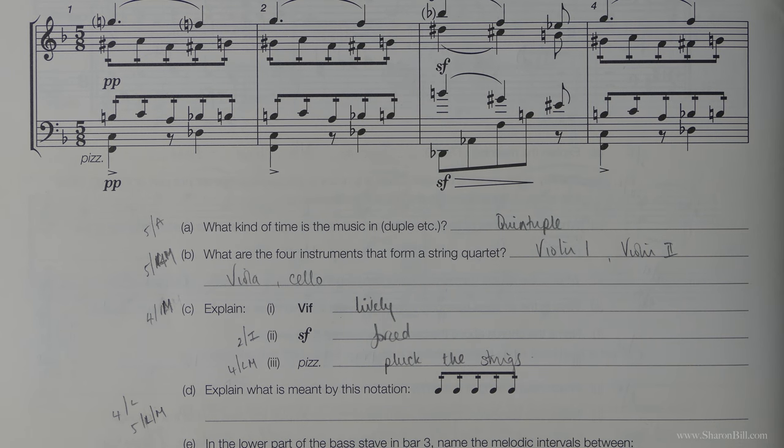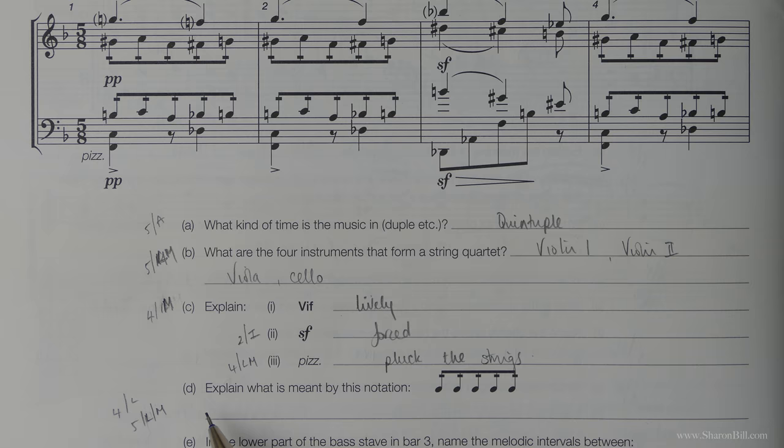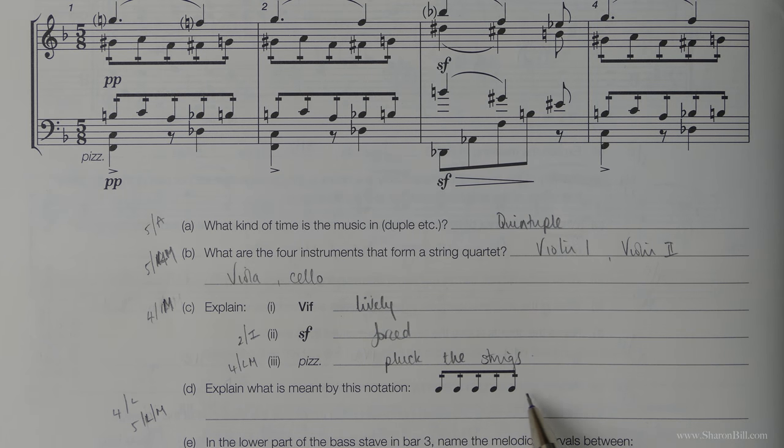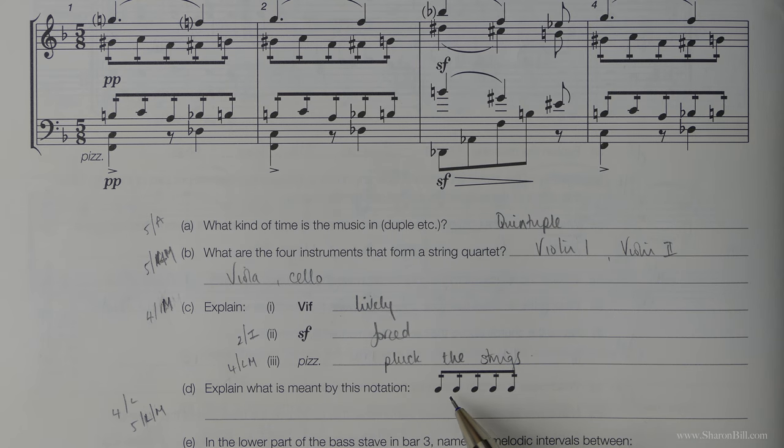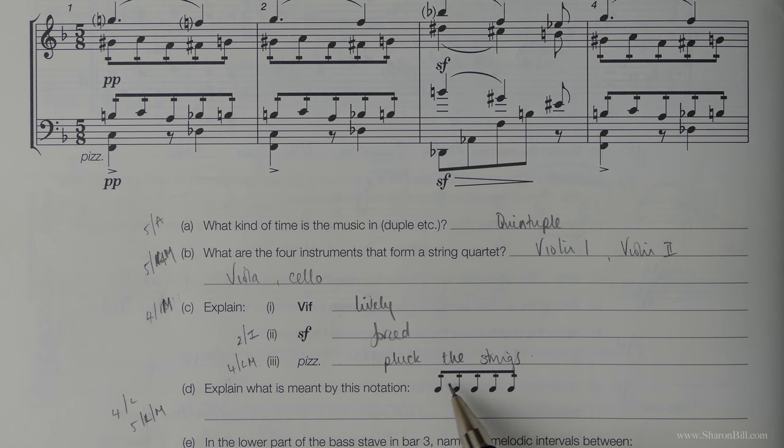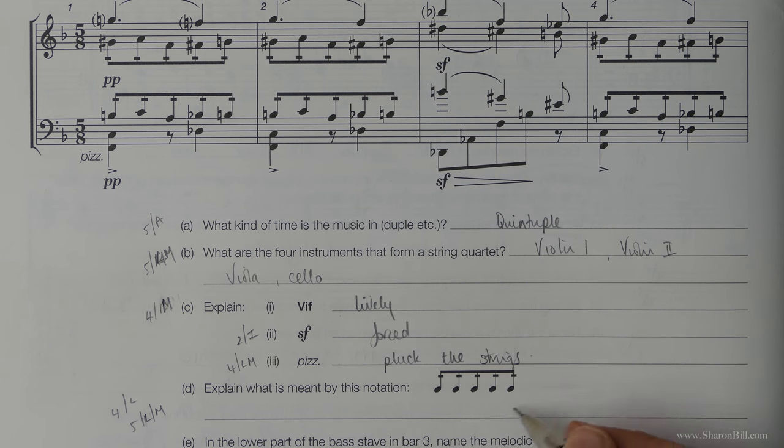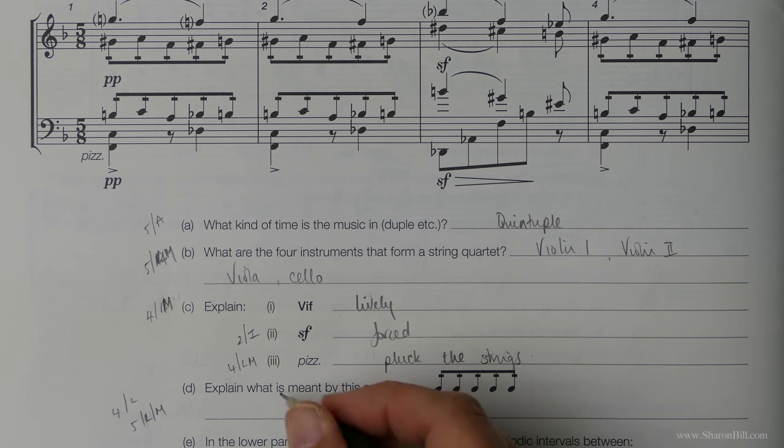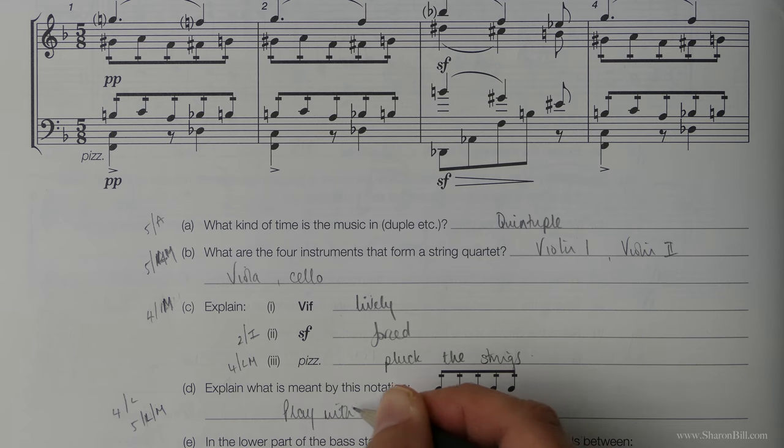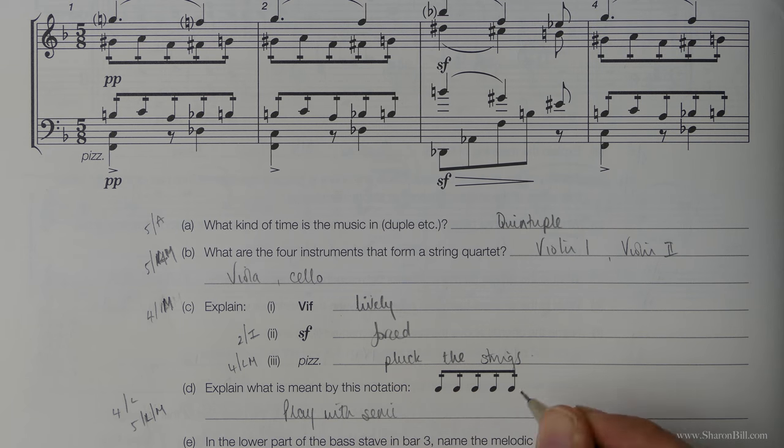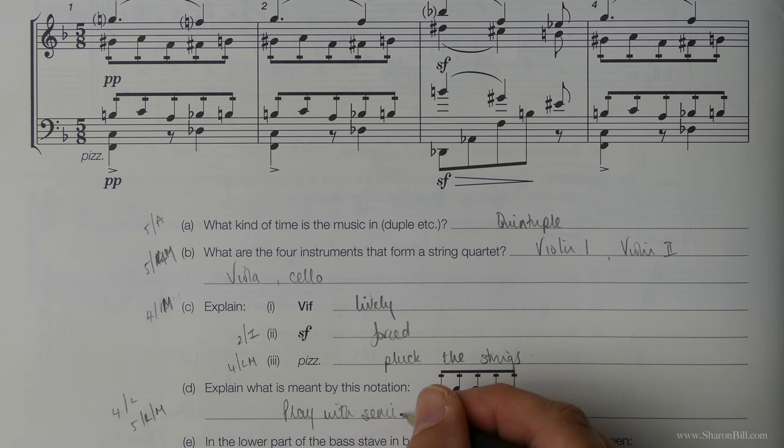This next question is also appropriate to the string instrument here. What they've been asked to do is rapid alt bowing and so what actually happens is these are played as if they were semiquavers. So really if you say play as semiquavers that will suffice. Just lots of rapid semiquavers.